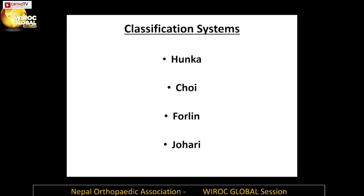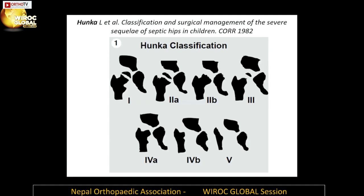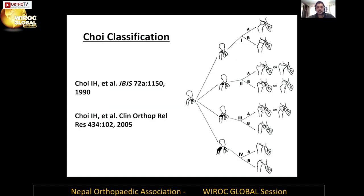There are various classifications — the four common ones are Hanka, Joy, Forlin, and Johari. I will not go into the details of the Hanka and Joy classifications; both deal with variable damage to the capital femoral epiphysis, pseudoarthrosis of the femoral neck causing post-infective non-union, and presence or absence of dislocation.